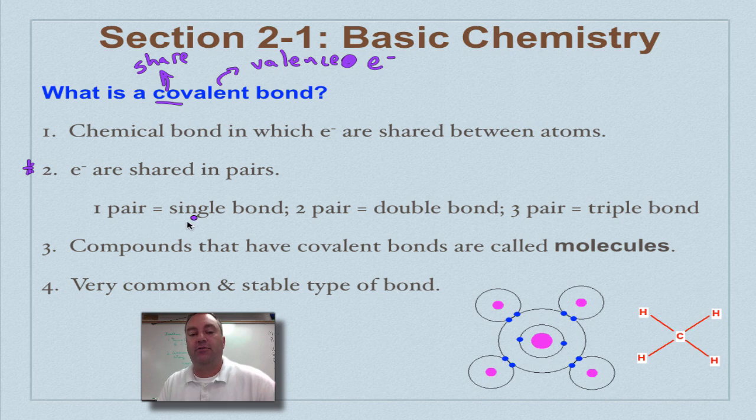If you have one pair of shared electrons, that's a single bond. Two pairs of shared electrons, double bond, and then three pairs of shared electrons, that's a triple bond. Compounds that have covalent bonds are called molecules. Remember that cute girl in chemistry class that you'd want to share your notes with? Her name is Molly. Molecule. Share with molecule.